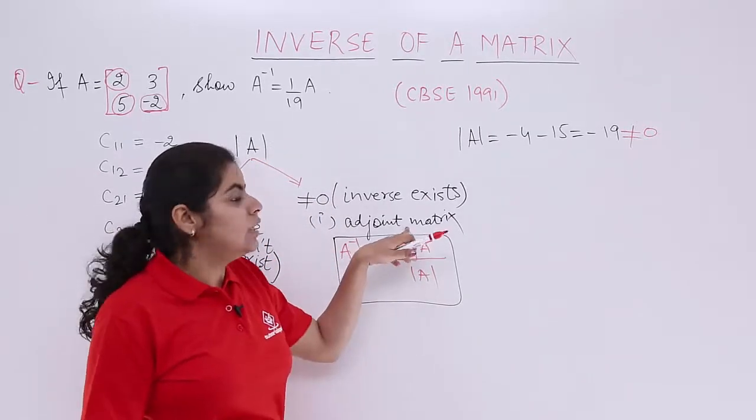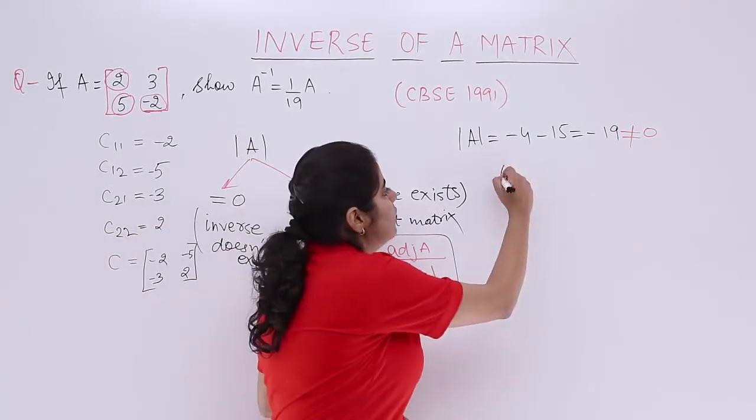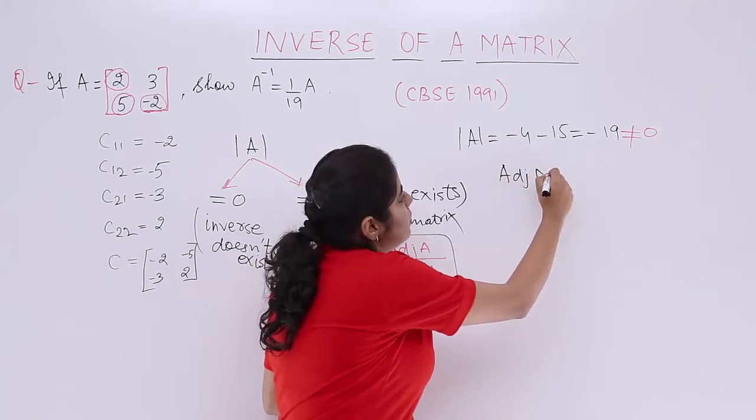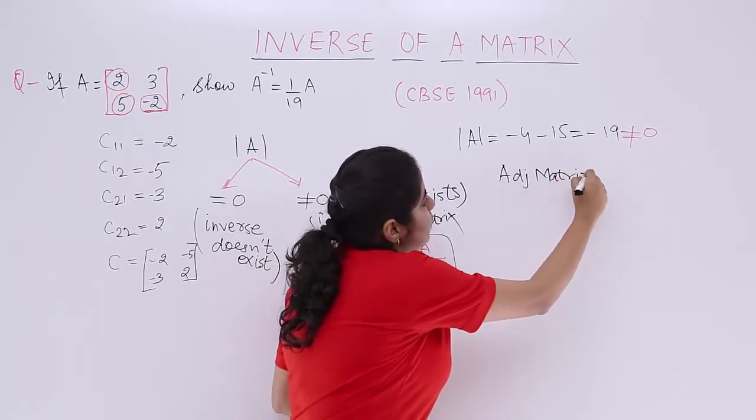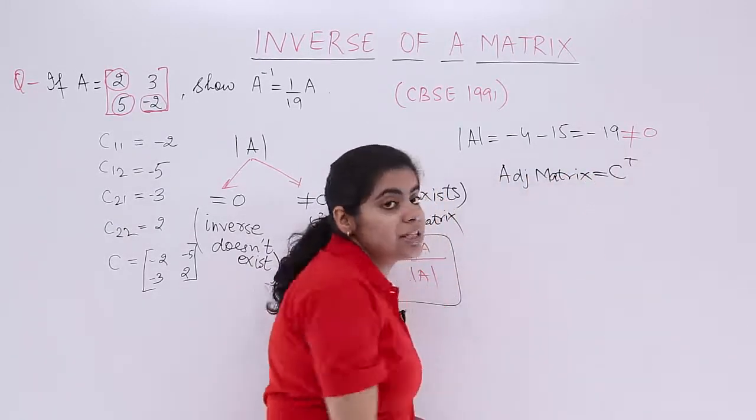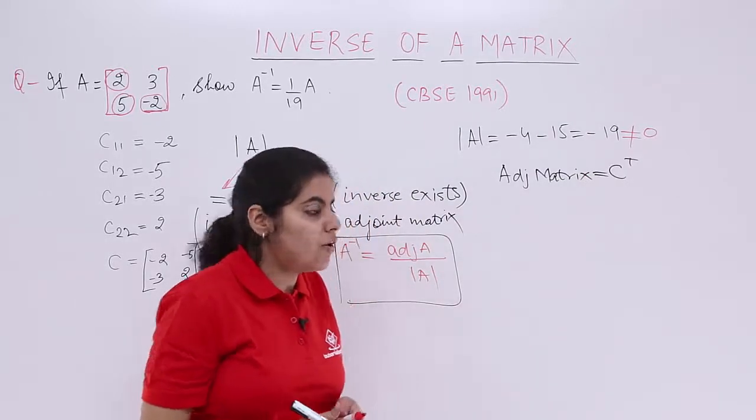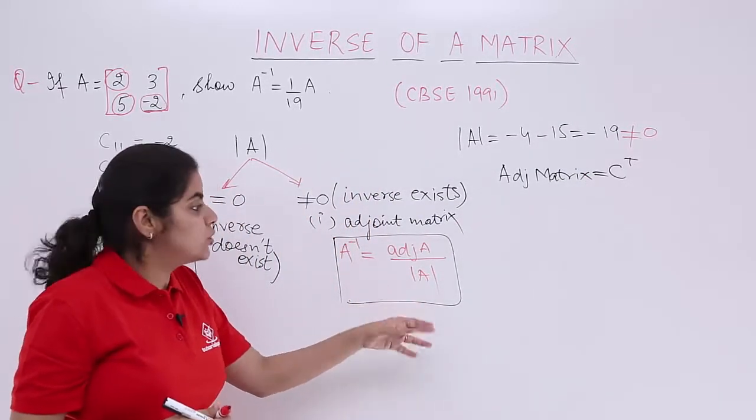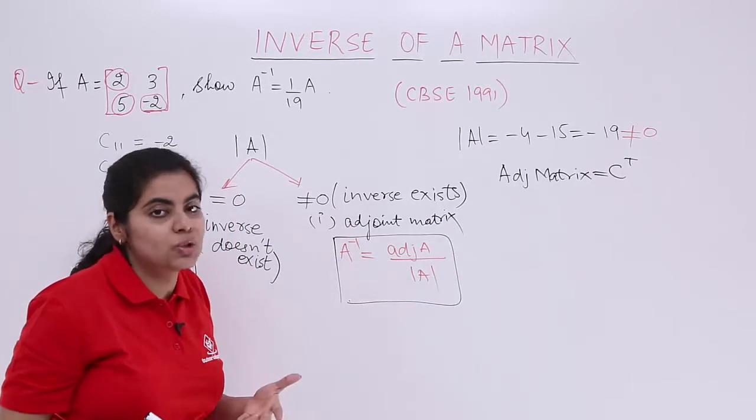You actually need to find out the adjoint. How to find out the adjoint? The adjoint matrix is equal to the co-factors transpose. We already know that this formula will come into picture when you find out the adjoint.